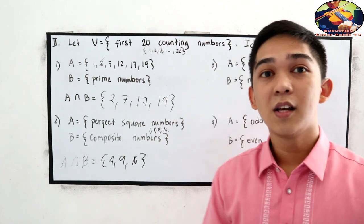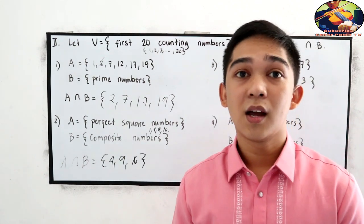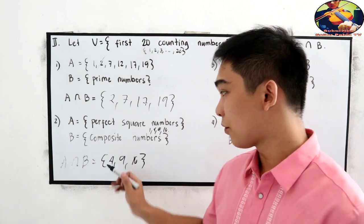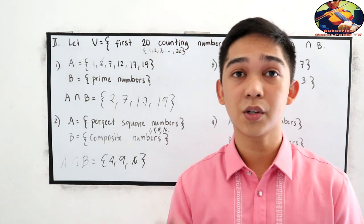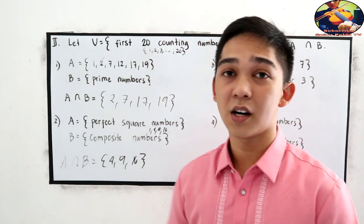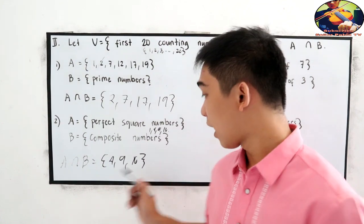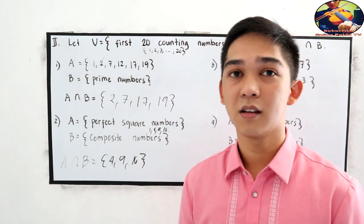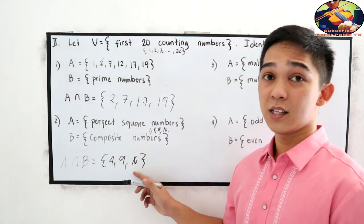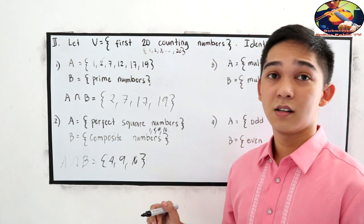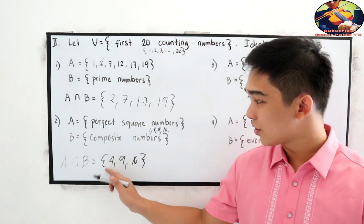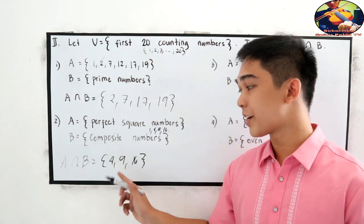When we say composite number, these are the numbers that have more than 2 factors. So, factors of 4 can be 4 times 1 or 2 times 2. Factors of 9 are 3, 9, and 1. 16, factors are 4, 16, 1. So, this is our A intersection B, 4, 9, 16.